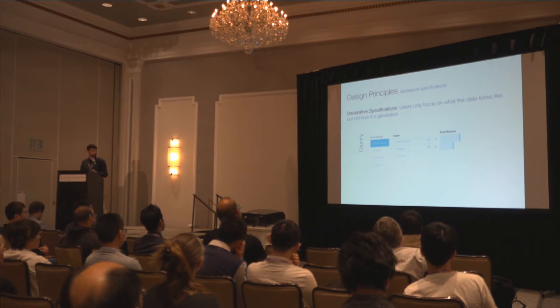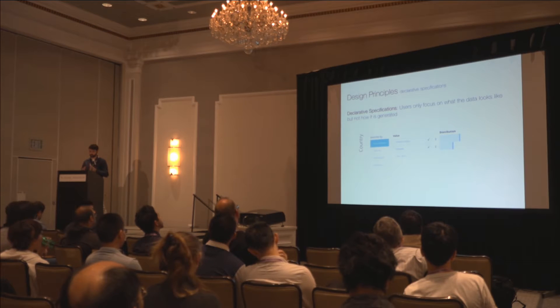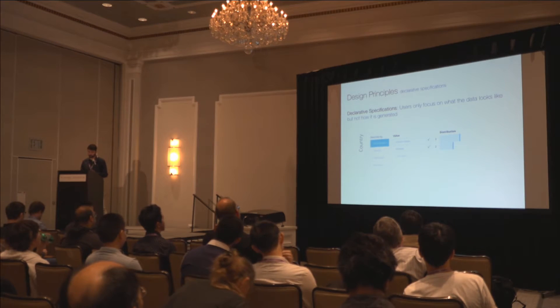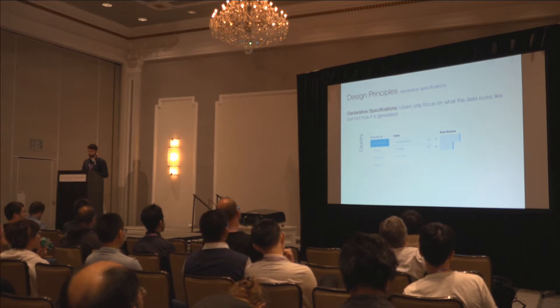Another one is supporting declarative specifications. We specify that we want to have a certain distribution between these two countries, but we do not say anything about how to generate them, not the algorithm behind it.